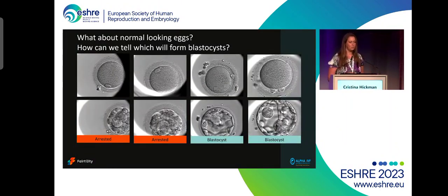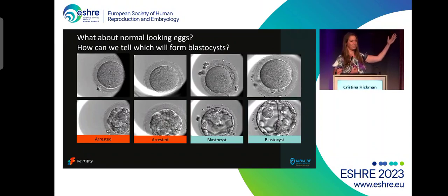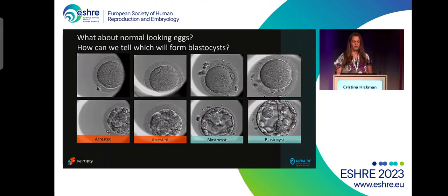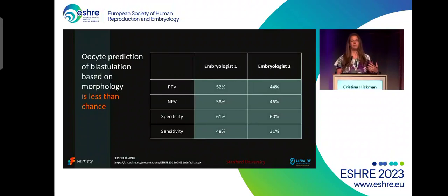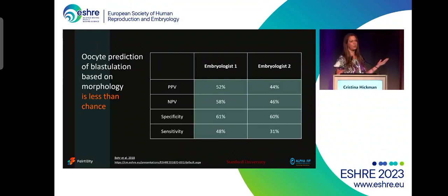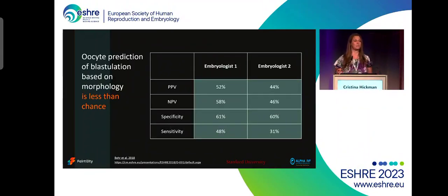So what about the good-looking eggs? Can we tell which good-looking egg will lead to a blastocyst and which one won't? I'm looking at these four eggs up there — I have the answer at the bottom — but when you look closely, they don't look that dissimilar to me. I couldn't tell them apart. There are many examples of different embryologists trying to quantify how well we can predict which eggs will become a blastocyst. This is one example from Bear from Stanford University, presented here not that long ago, and he shows it's pretty much as if you might as well flip a coin rather than look at the egg and make an assessment.